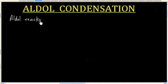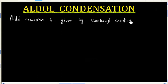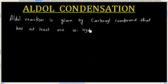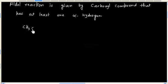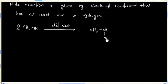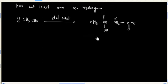The aldol reaction is given by a carbonyl compound that has at least one alpha-hydrogen. For example, let us consider this reaction. We have 2 moles of aldehyde. The final product we have is a beta-hydroxy aldehyde.